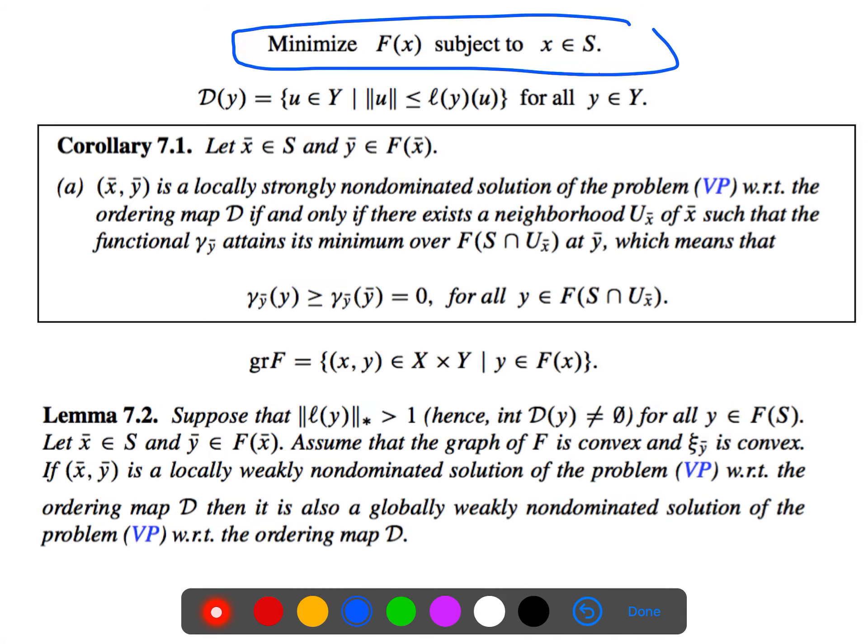If we want to minimize f of x, again, we use our cones, BP cones. This is our BP cones that we always use. If x bar and y bar is a locally strongly non-dominated solution, if and only if there exists a neighborhood such that the functional attains its minimum.